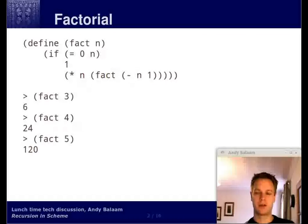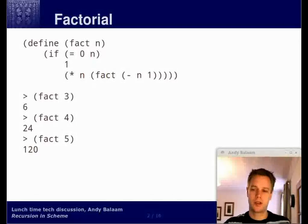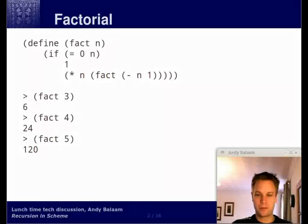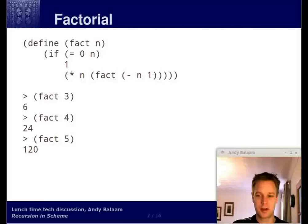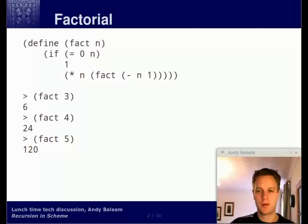So let's start with factorial. At the top here is a function which is supposed to implement the factorial function, which you might know from maths. That's when you write a number and then put an exclamation mark after it — multiply that number by the number one less than it, and so on, until you get down to zero. The factorial of zero is one. This function implements that mathematical function in a way that's quite similar to how you might express it in maths, and we'll see a better way later on.